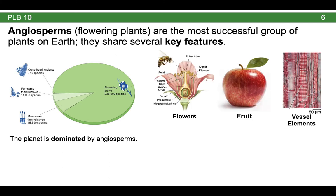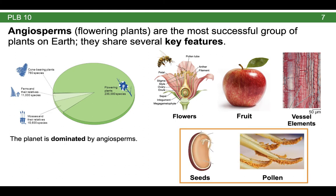A good question would be why. Why are angiosperms so important? Why are they so diverse relative to all the other plant groups? One reason is that they share several key features. These key features include flowers, fruit, and vessel elements. Two other features tend to be associated with angiosperms but are not restricted to them. That includes seeds and pollen. It's important to remember that both seeds and pollen also occur in gymnosperms.